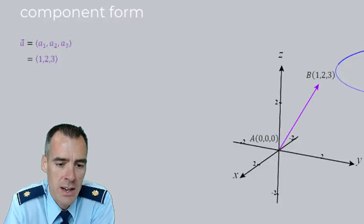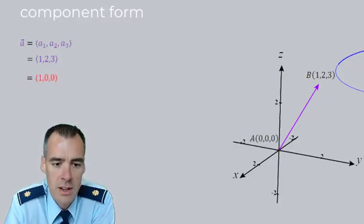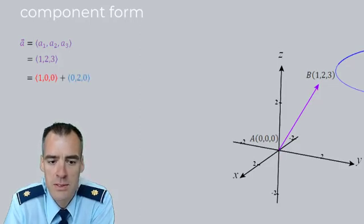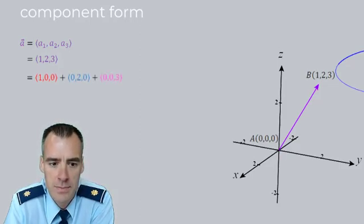So our vector A would be equivalent to the vector (1, 0, 0) plus the vector (0, 2, 0) plus the vector (0, 0, 3), right?